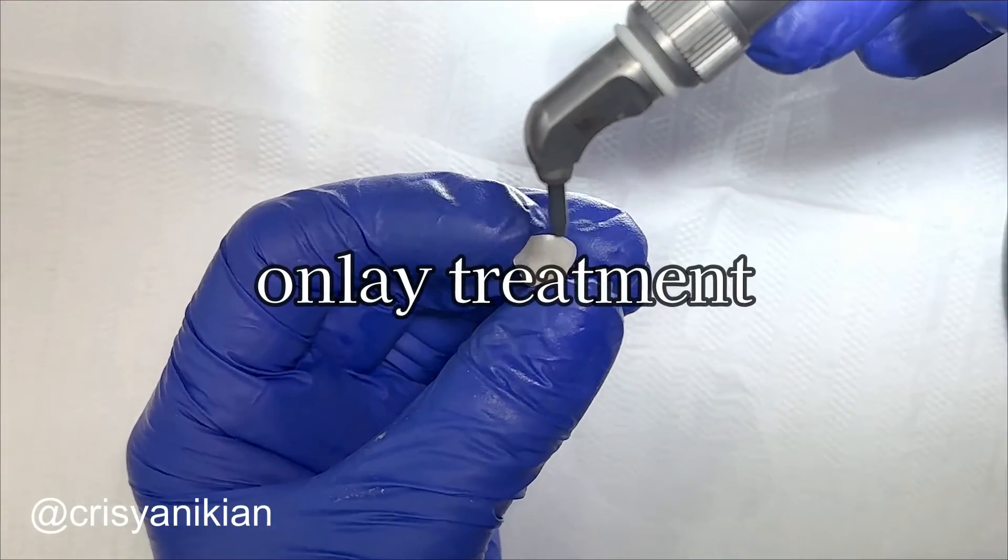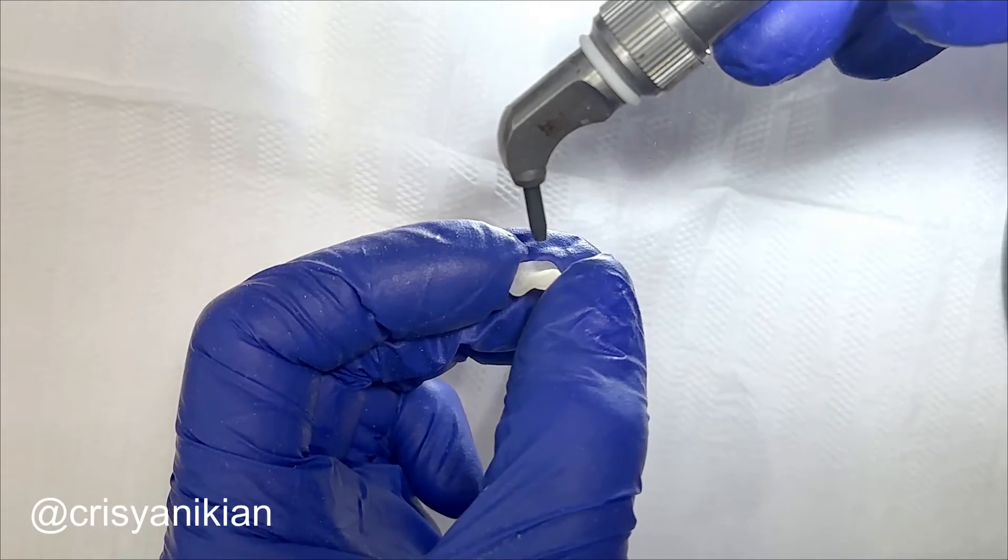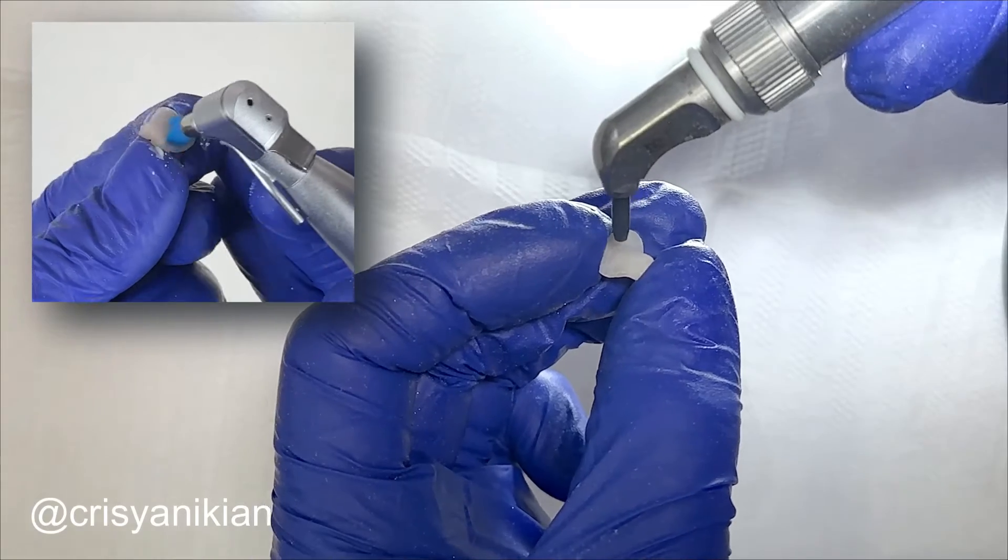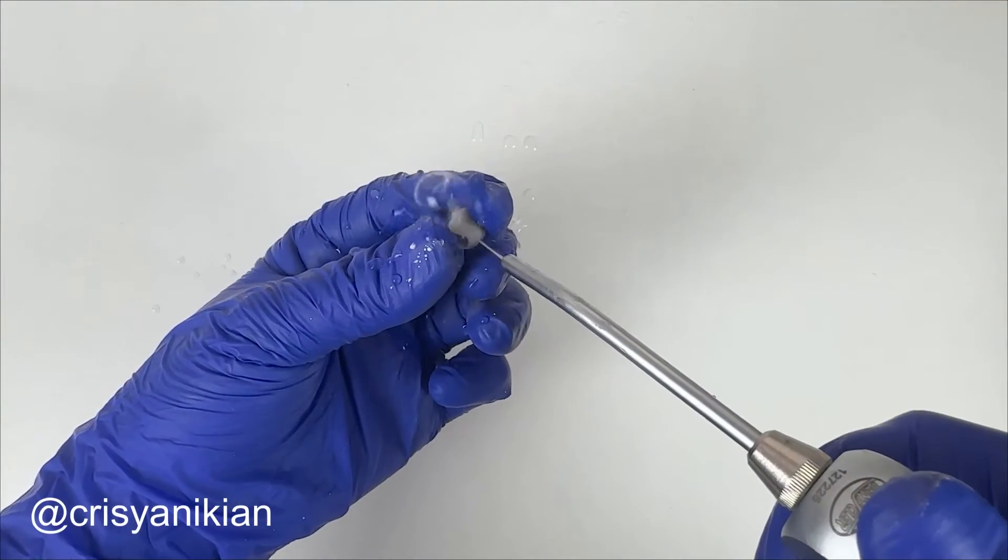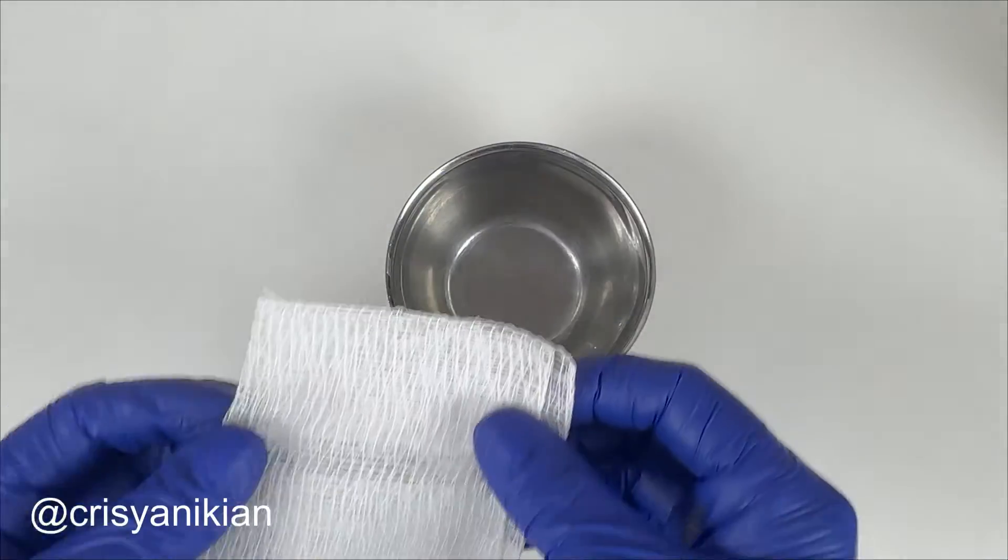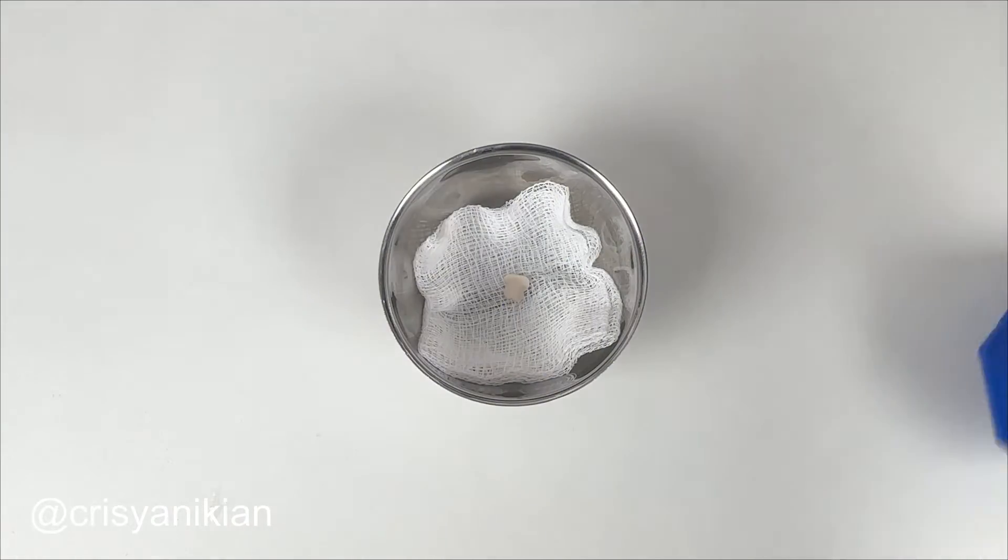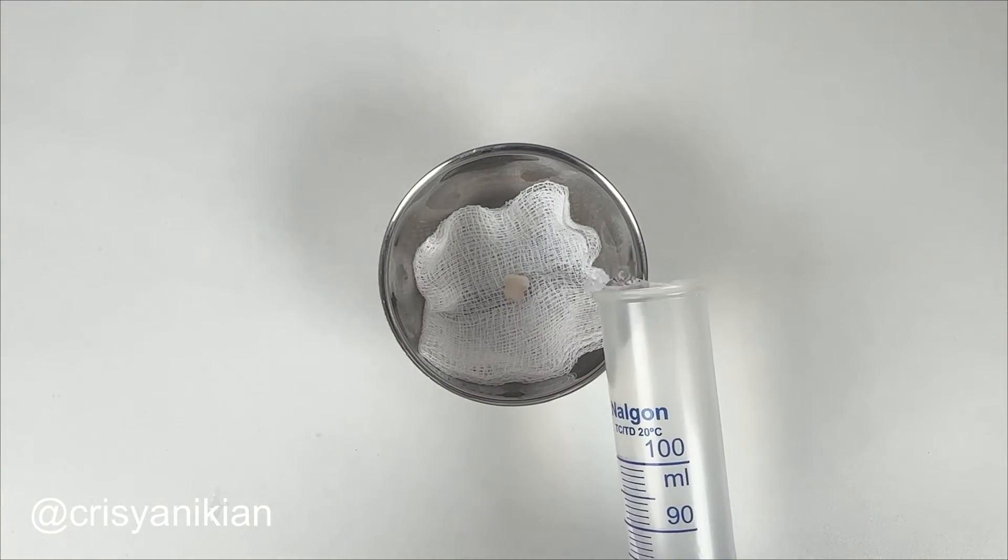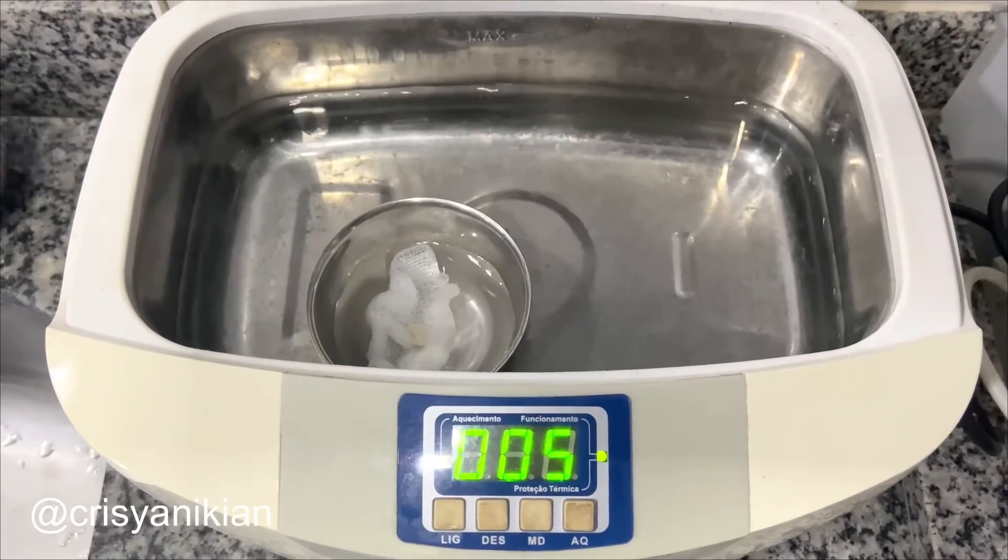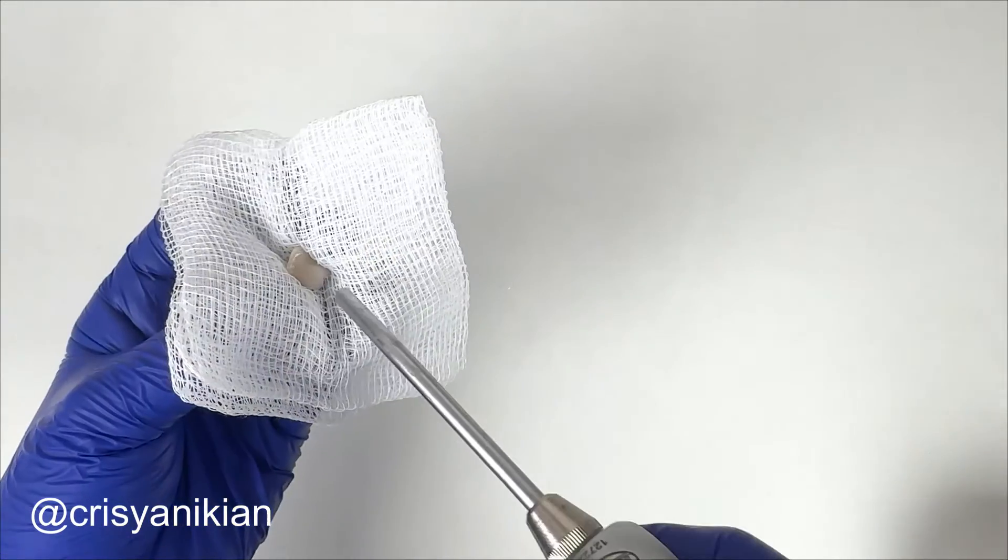Now move on to onlay treatment, or have your assistant do it while you work on the prepared tooth. Clean the internal surface of the onlay either with a Robinson brush and pumice paste or with aluminum oxide jet. Remove the cleaning residues and then clean the onlay with an ultrasonic bath. Line the bottom of the container with gauze to prevent the onlay from hitting its walls and possibly fracturing. Cover it with distilled water and place it in the ultrasonic bath for five minutes. Remove the onlay from the ultrasonic bath and thoroughly dry it.